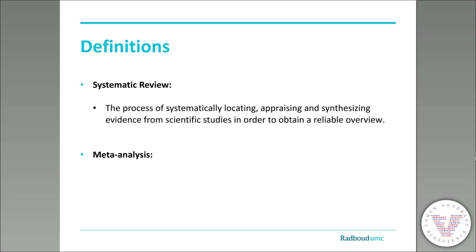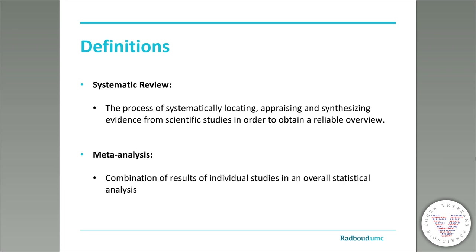A systematic review is a process of systematically locating, appraising, and synthesizing evidence from scientific studies in order to obtain a reliable overview. It is important to note that we search for all available published evidence. A meta-analysis can be part of a systematic review, and it's a combination of the results of individual studies in an overall statistical analysis. Meta-analysis can be part of a systematic review, but it is not necessary — you will only combine the data if studies are homogenous enough, for example.